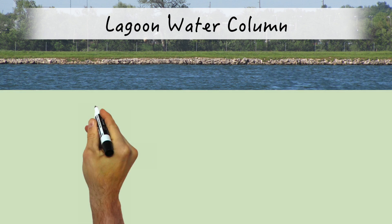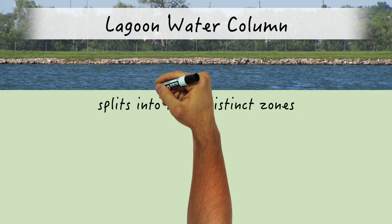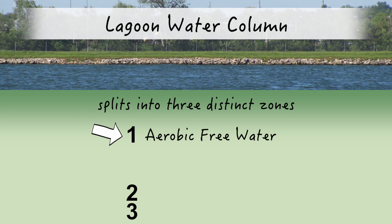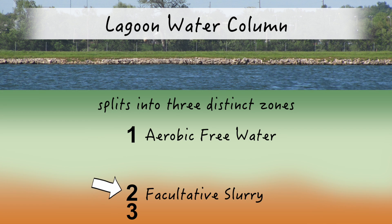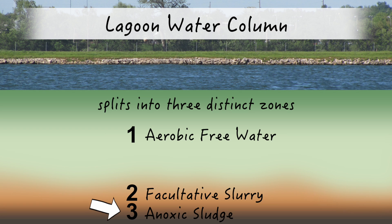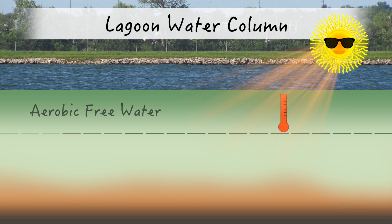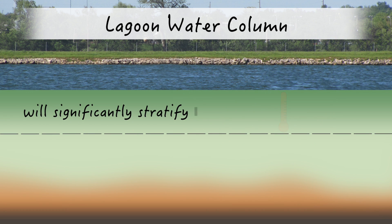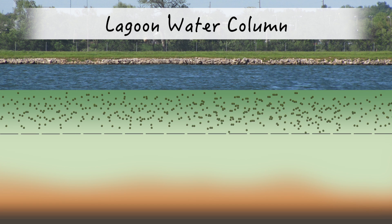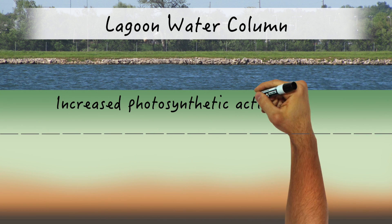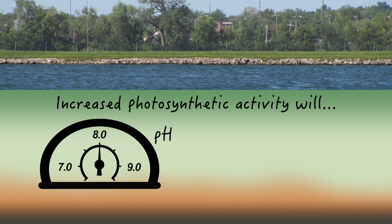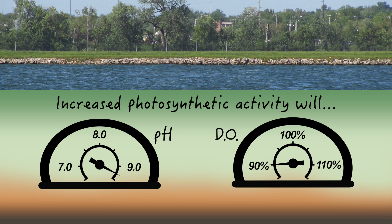The water column in a wastewater lagoon can usually be split into three basic zones: the aerobic free water at the top, an intermediate facultative slurry transition layer, and the anoxic sludge blanket at the bottom. In the summertime, the aerobic free water will usually experience significant temperature stratification in the top two to three feet. In this warm topmost layer, algae production will thrive and the increased photosynthetic activity will: one, increase pH via dissolved carbon dioxide consumption, and two, drive dissolved oxygen into supersaturation.